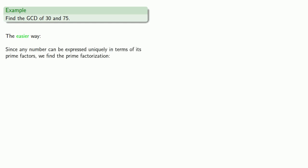Now that's a lot of work, so let's take a look at the easier way. Since any number can be expressed uniquely in terms of its prime factors, we find the prime factorization of 30. And of 75. And remember, the fundamental theorem of arithmetic says that the prime factorization is the recipe for a number.